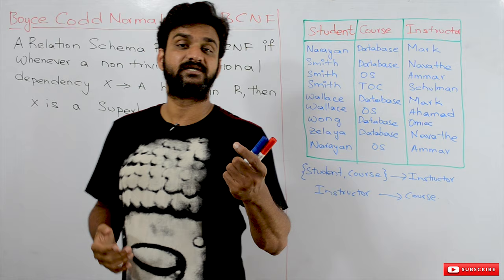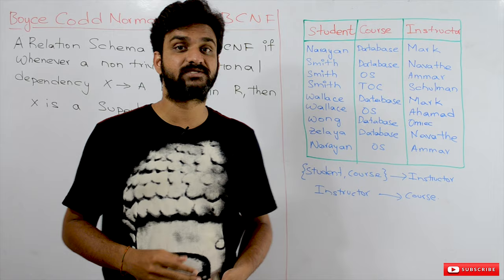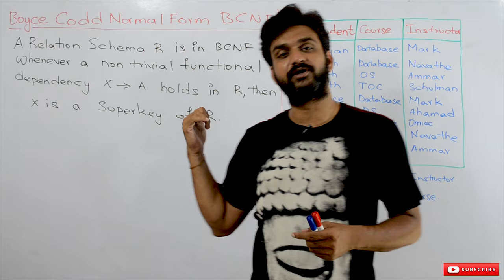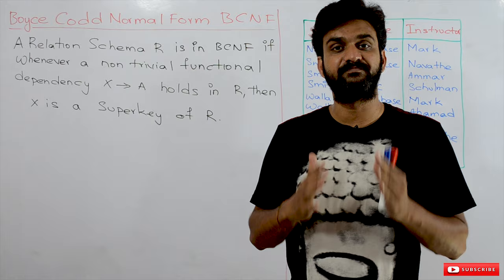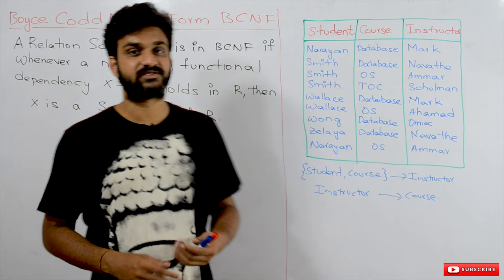It is also called as 3.5NF. The Boyce-Codd Normal Form is called a Strict Third Normal Form because, when compared with the Third Normal Form, Boyce-Codd Normal Form is a bit stricter. Why it is stricter and how it is stricter, that we will try to understand with this example. But before that, we will try to understand the definition of Boyce-Codd Normal Form.